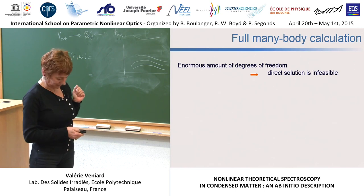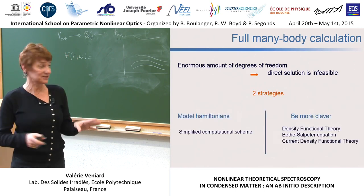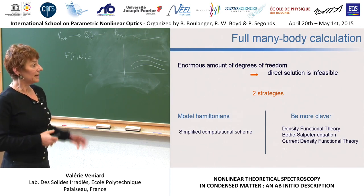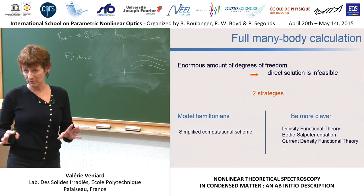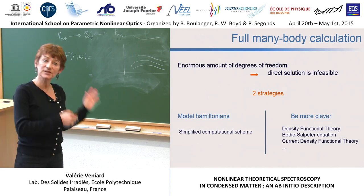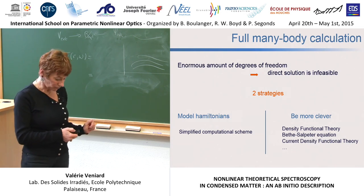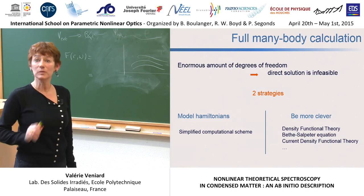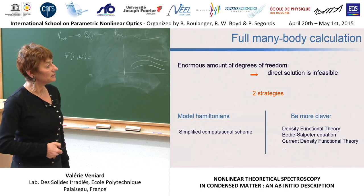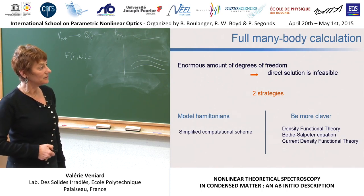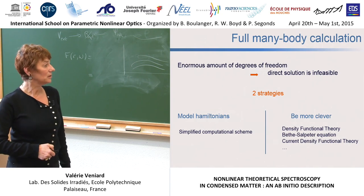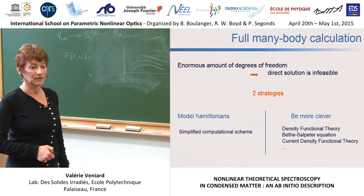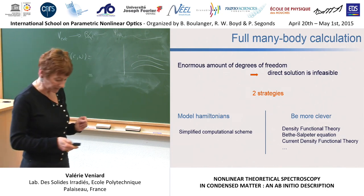What can we do? We have two strategies. The first is to use model Hamiltonians — for example, tight binding — but that's not an ab initio calculation. If we really want to do an ab initio calculation, the only way is to be more clever: we can use density functional theory, the Bethe-Salpeter equation, or current density functional theory. I will say a few words on each and show you some results.